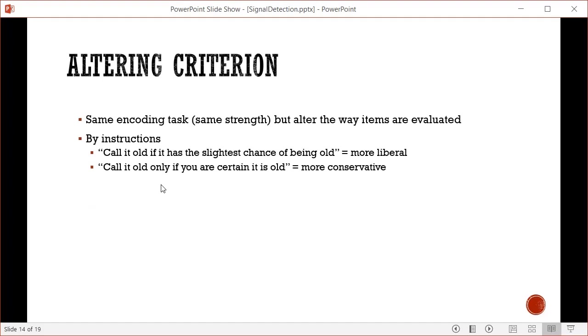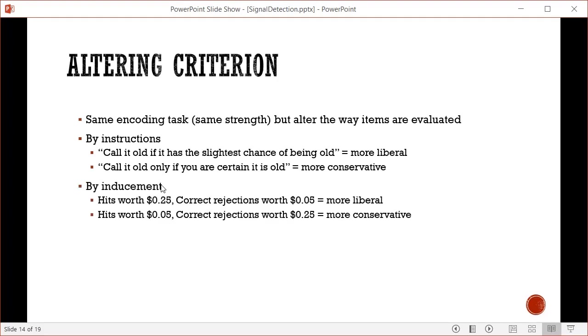How do we vary criterion? You use the same encoding task to create memories of the same strength, but alter how items are evaluated. You can do this by instructions - tell people to call it old if it has the slightest chance of being old for more old responses, or only if they're certain for fewer old responses. You can also use inducement by paying people, like 25 cents for a hit and 5 cents for a correct rejection. This reward imbalance makes them more liberal. Flipping the reward creates a more conservative criterion.